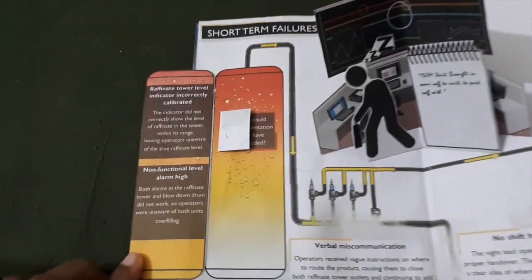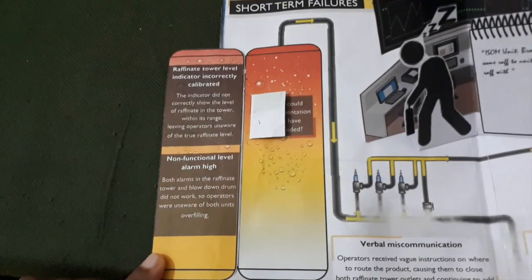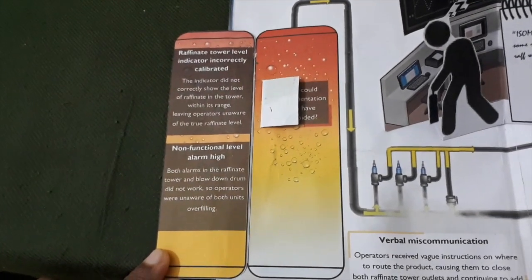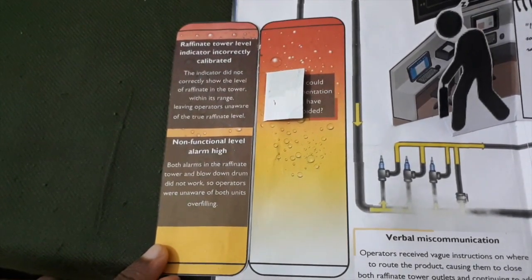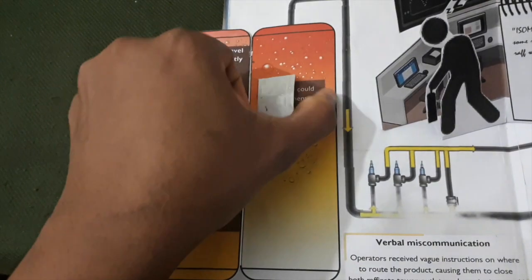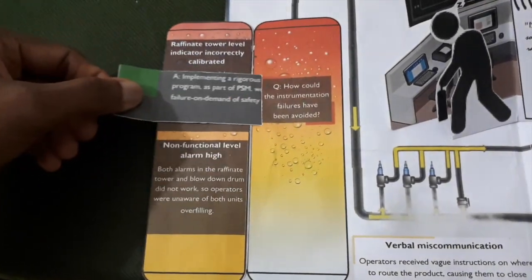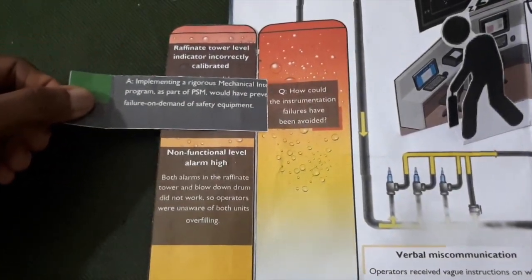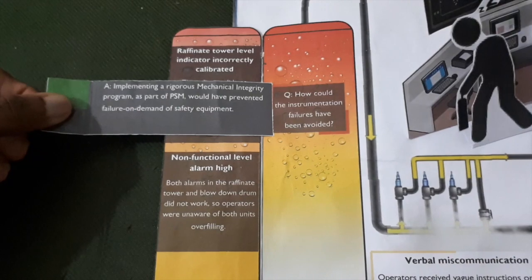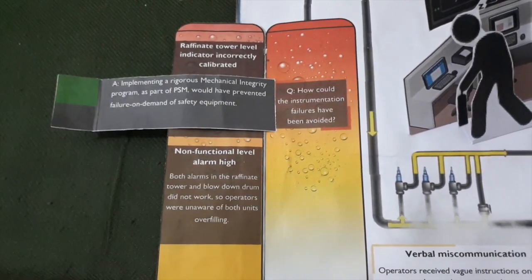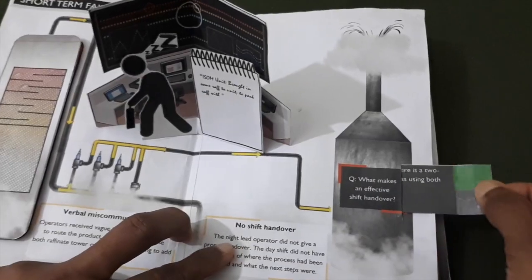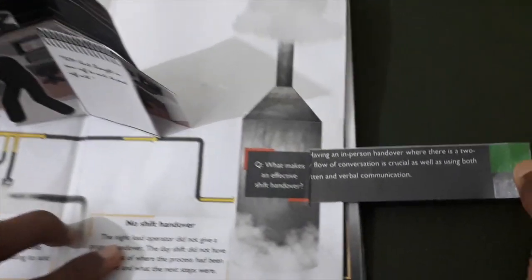By opening the raffinate tower, the boxes represent the mechanical integrity failures that were not seen by the operators. On the left of the page is the raffinate tower, and on the right of the page is the blow-down drum.